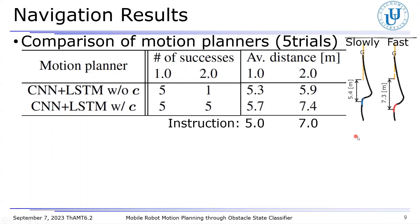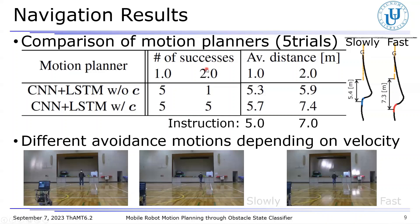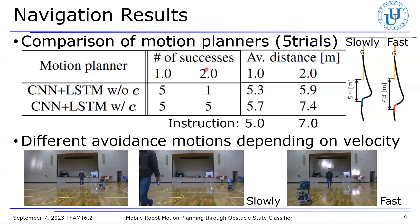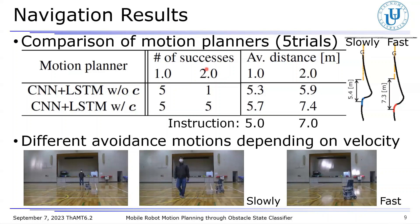Here, let us show the trajectories of the robot for the person walking slowly or fast. The blue and red plots indicate that the robot classified the state into slow and fast respectively. On the basis of the correct classification result, the robot avoided the obstacle by planning the avoidance motions as instructed. Let us conclude this presentation by showing the movies of the robot based on the proposed motion planner with the obstacle state input. Thank you very much for your kind attention.